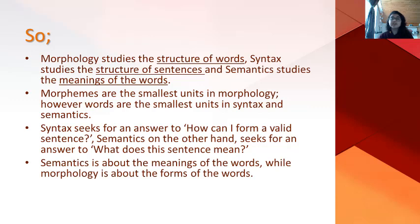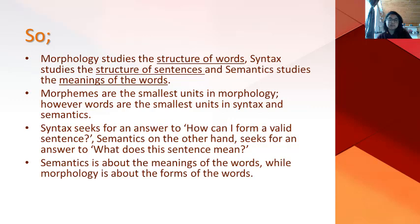So, morphology studies the structure of words, syntax studies the structure of sentences, and semantics studies the meaning of words. Morphemes are the smallest units in morphology; however, words are the smallest units in syntax and semantics. Syntax addresses what a sentence means, while semantics is about the meaning of words and morphology is about the forms of words.